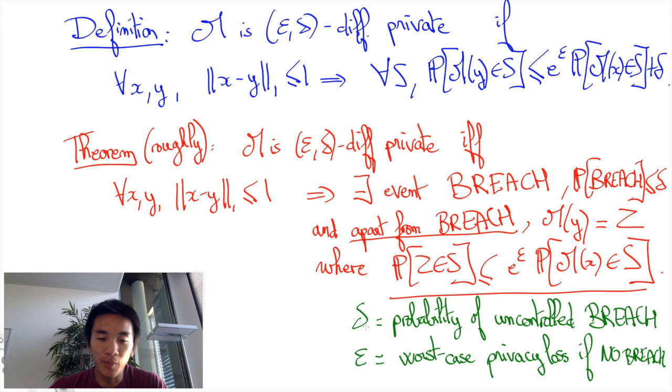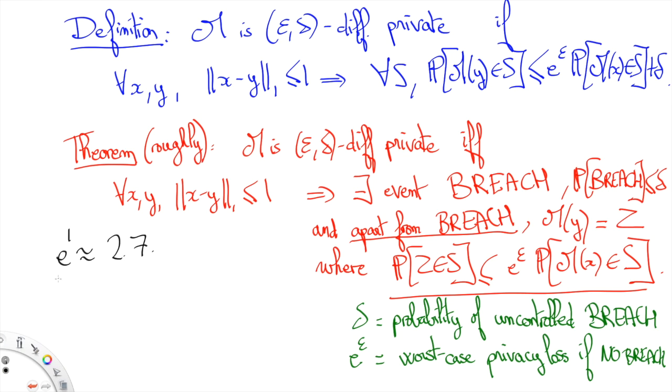As opposed to this, it is fine if epsilon takes values that are around, let's say, 1. Actually, what matters is not epsilon but e to the epsilon.